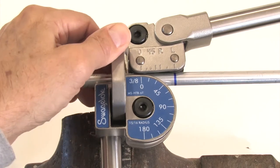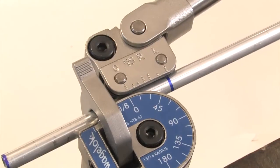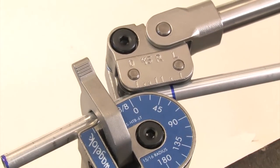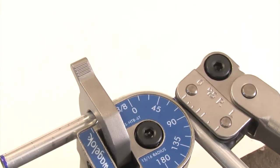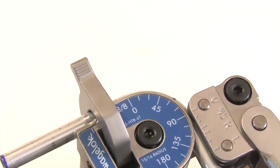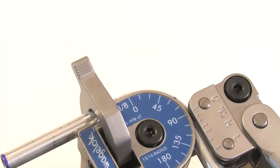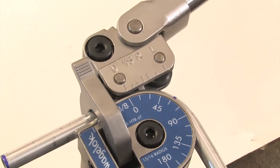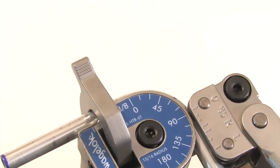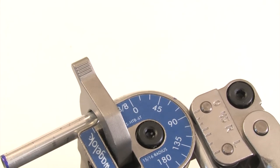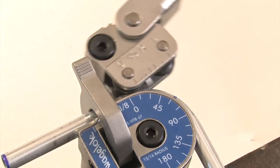Latch the tube firmly. Pull the short handle until the zero on the top scale lines up with the 90 on the degree scale. Lift the short handle away from the tube. The tube may spring back. To correct this, pull the short handle down again and bend until the 90 degree mark is reached.